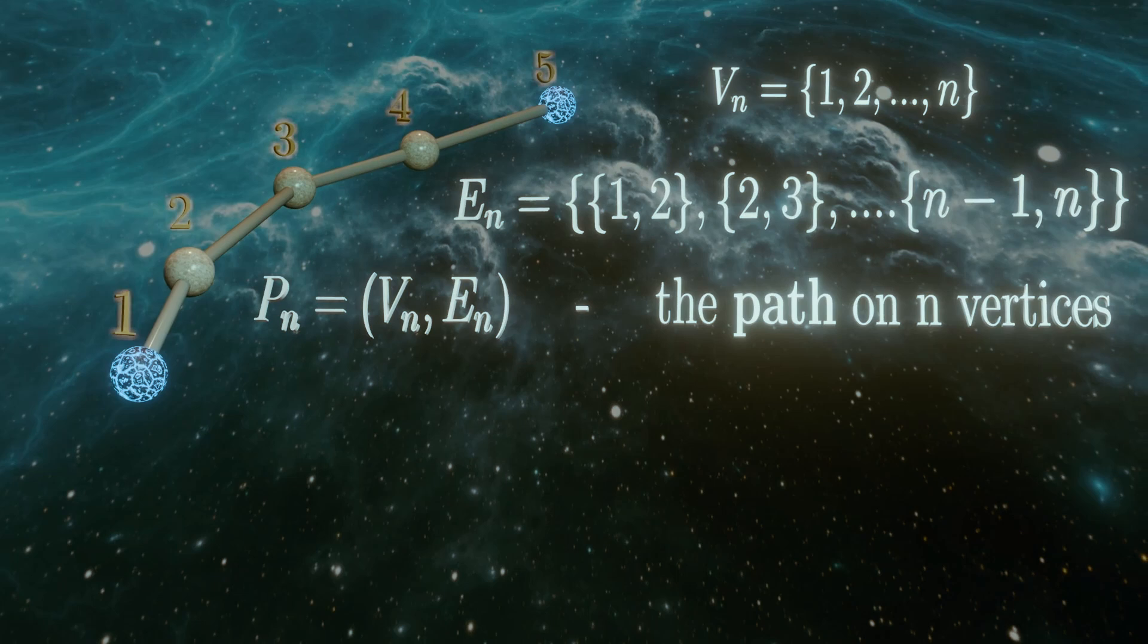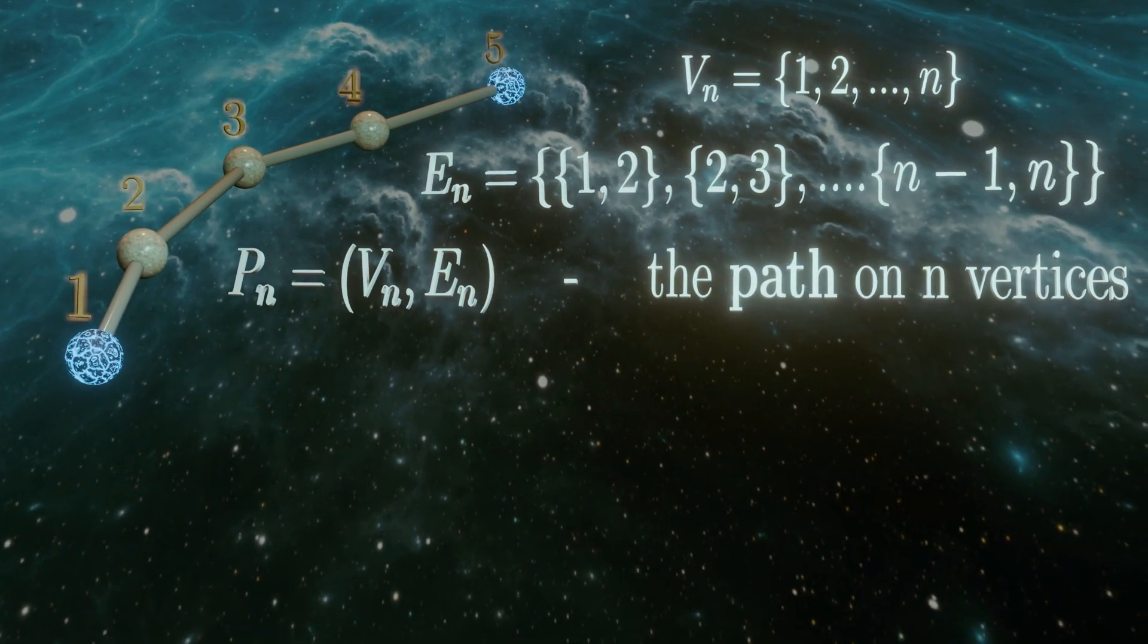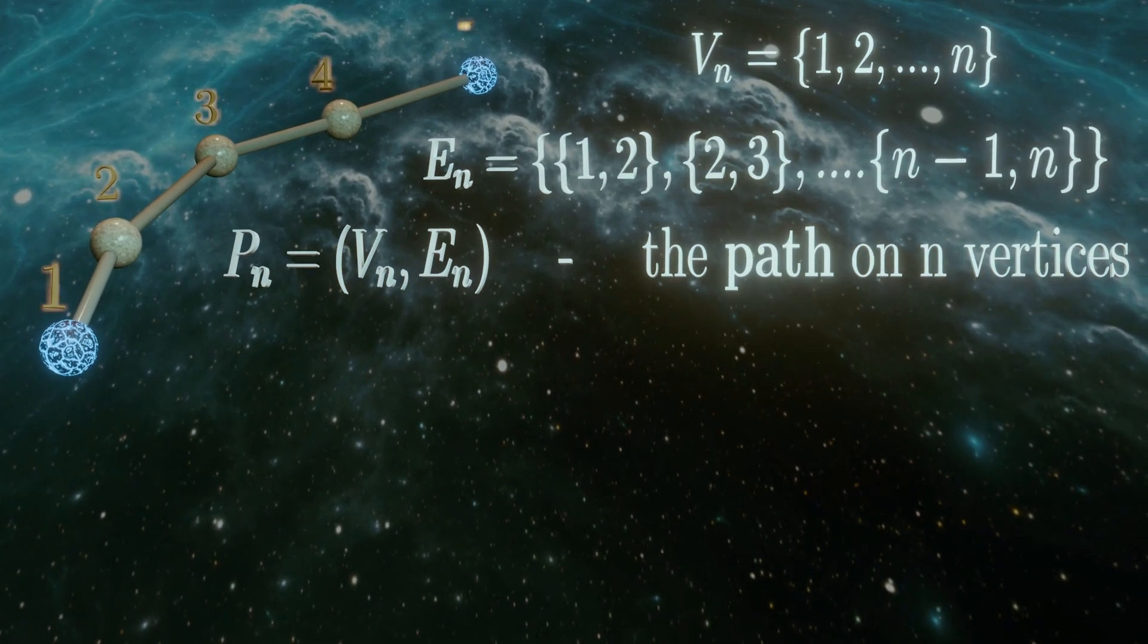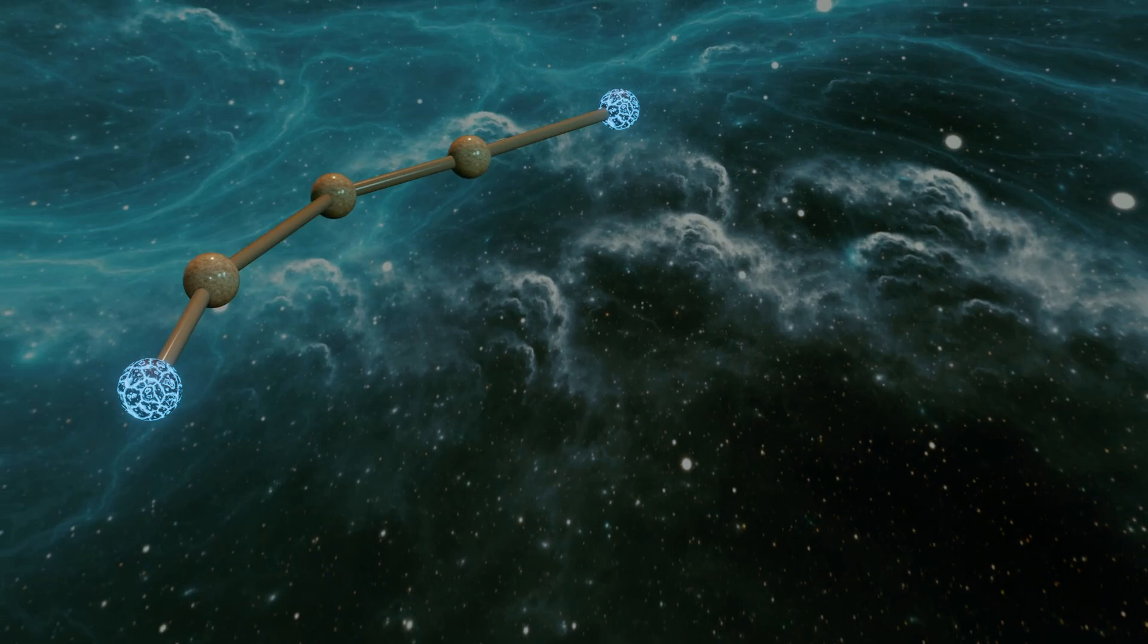So here, this is P5, and we define this to be of length 4, and in general, Pn has length n-1. So be careful not to read the n in Pn as its length, rather it's the number of vertices in the path, which is always one more than its length.